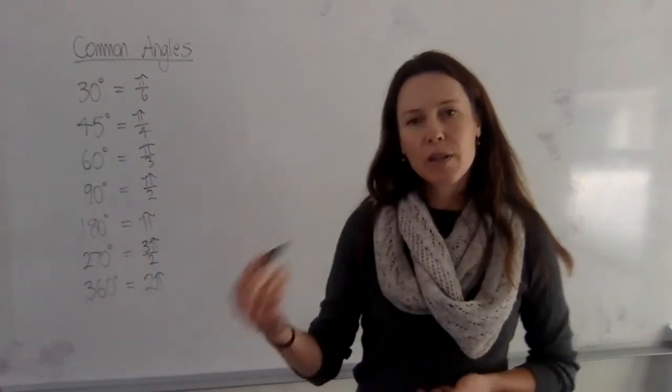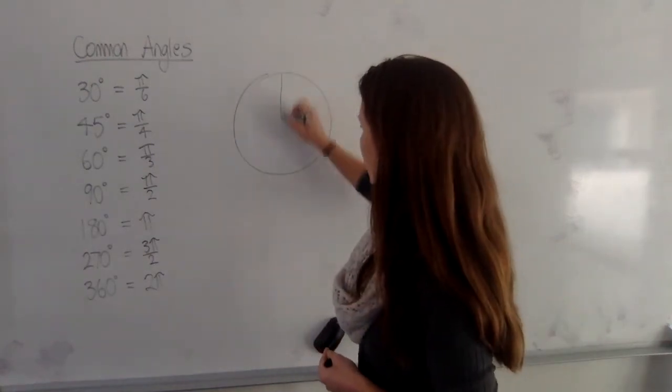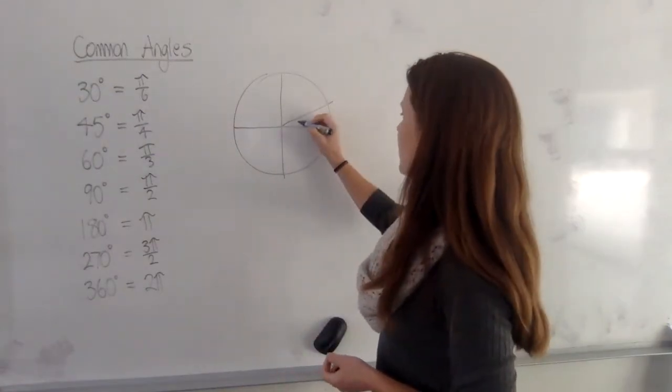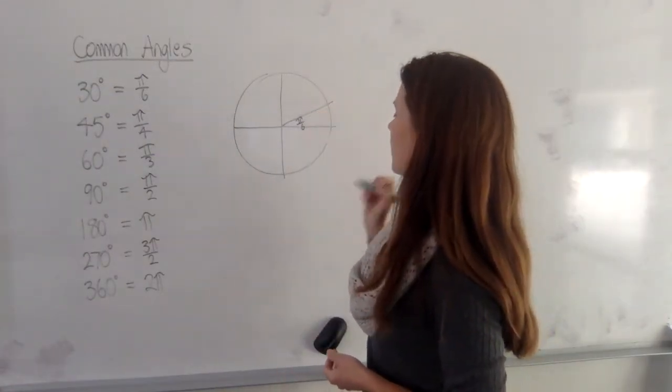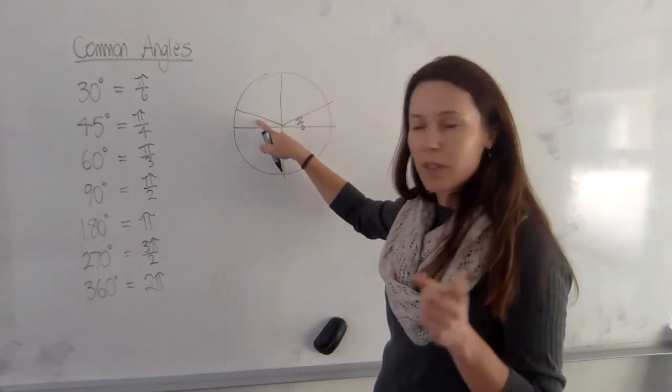Now, what you'll find is that when you're using related angles, because, of course, we know a bunch of angles that are related very closely to 30, don't we? If we have 30 degrees here, or pi on 6, then that's also closely related to 150, right?